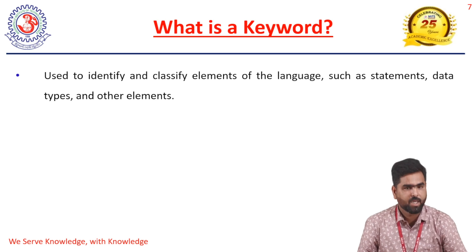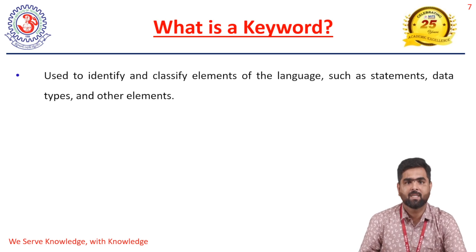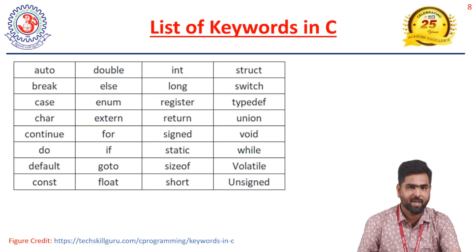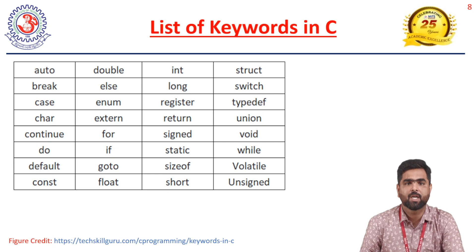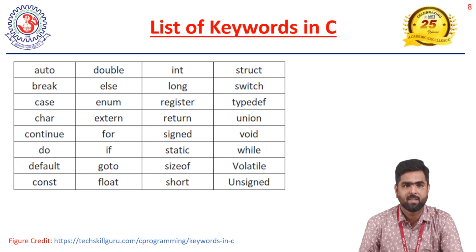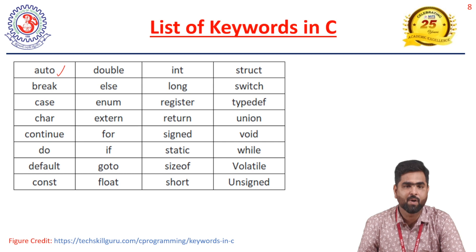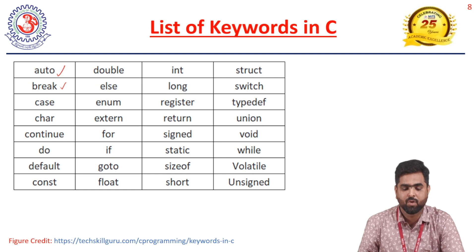Keywords are also used to identify and classify the elements of the language such as statements, data types, and other elements. There are a total of 32 keywords in C language. The first is 'auto' (automatic), which comes under storage class. Next is 'break', used in switch statements. Then 'case', also used in switch statements. 'Char' represents the character data type. 'Continue' comes under branching or jump statements.